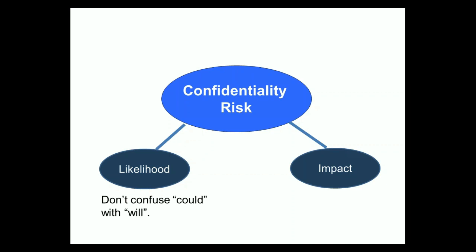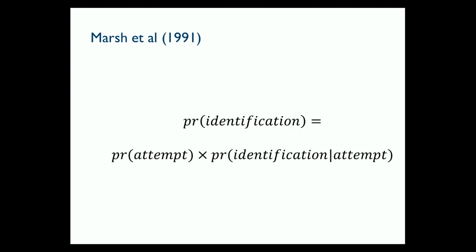Impact tends to get ignored, and there is a tendency to treat the impact of confidentiality risks as apocalyptic — as if a breach of confidentiality was a nuclear power station blowing up. That's clearly nonsense. A mature understanding of risk will think through: what are the impacts, what are the costs, and therefore what level of likelihood does that warrant in terms of protection, given the benefits that are coming from sharing the data?